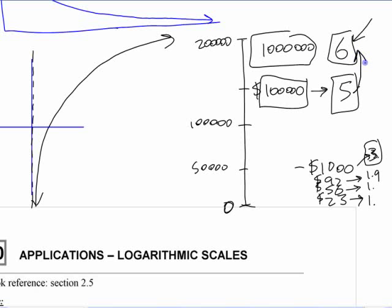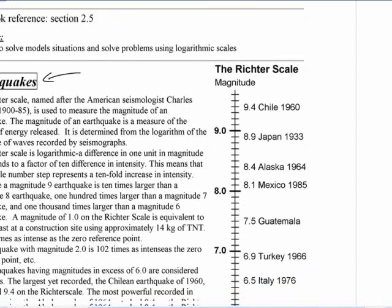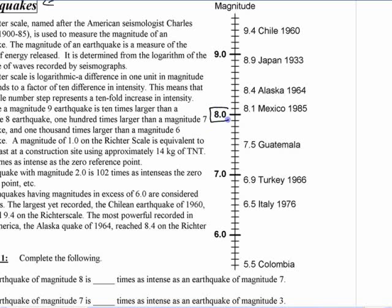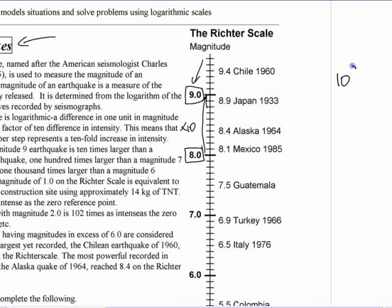You just have to remember that a jump of 1 on the scale is actually 10 times as much. And that's what's true in this situation here. If you go from 8 to 9, that actually is 10 times more energy. These are the exponents of what you're looking at, of the amount of energy released. A magnitude 9 earthquake, that's 10 to the 9th. A magnitude 8 earthquake is 10 to the 8th.